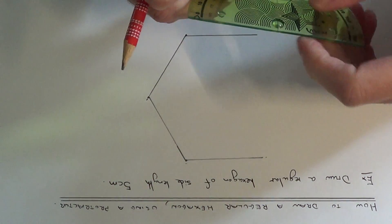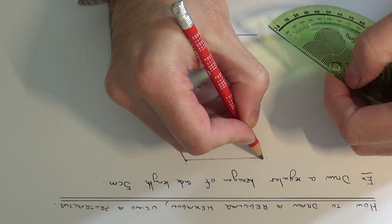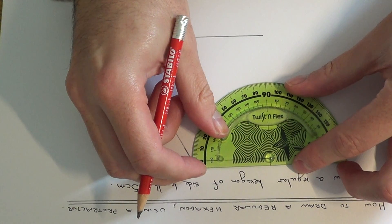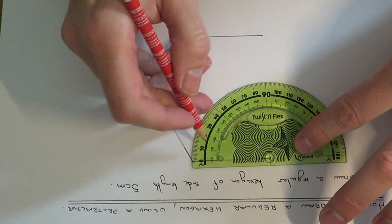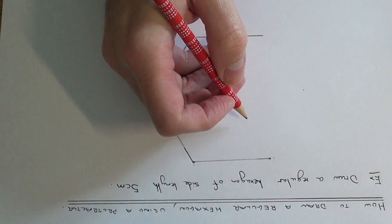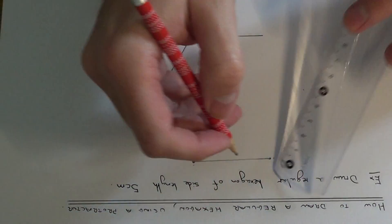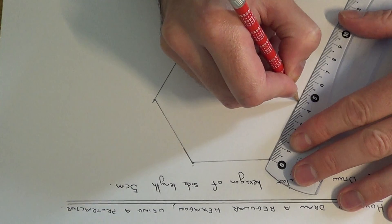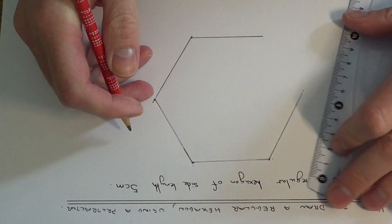We're getting there now, just two more sides to do. Again, go to the end of the line and measure another angle of 120. Again, make it 5cm long. There we go.